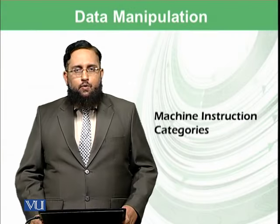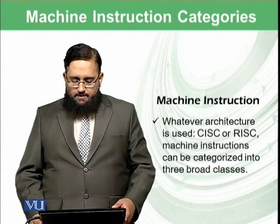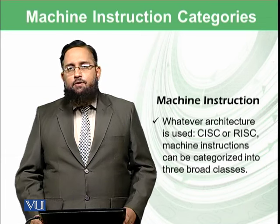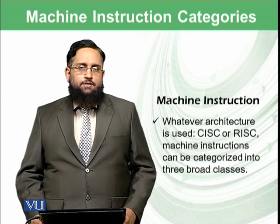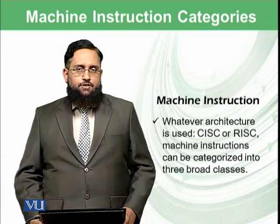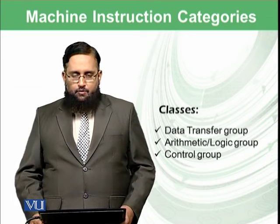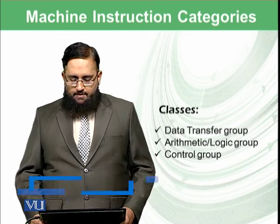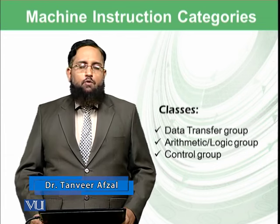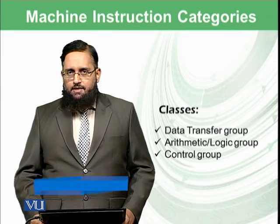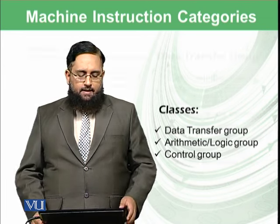Today we will discuss machine instruction categories. Whatever architecture a computer is using, whether CISC (complex instruction set computer) or RISC (reduced instruction set computer), the machine instructions can be categorized into three broad categories: the data transfer group, the arithmetic logic group, and the control group. We will learn about all types of such instructions, how they are decoded and encoded in the computer.